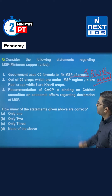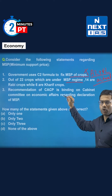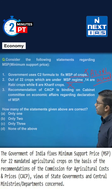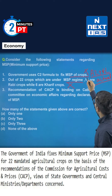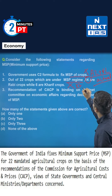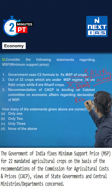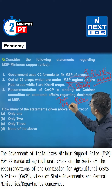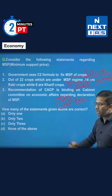The second statement says that out of 22 crops under the MSP regime, 14 are from rabi crops while 6 are from kharif crops. This statement is false. Not considering sugarcane, out of the 22 crops, 14 are basically kharif crops and 6 are rabi crops. The remaining two are jute and copra, which are essentially cash crops or commercial crops. So this statement is false.